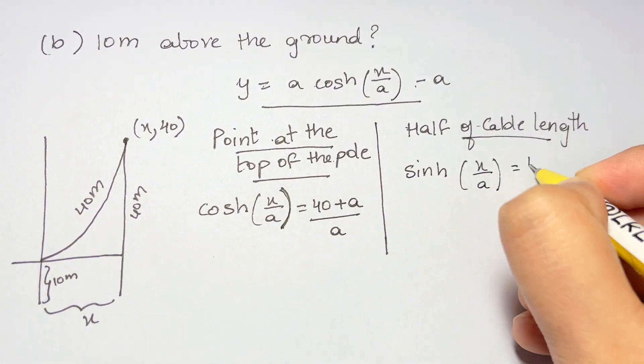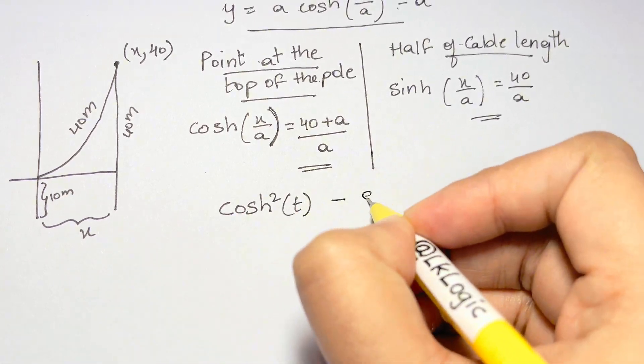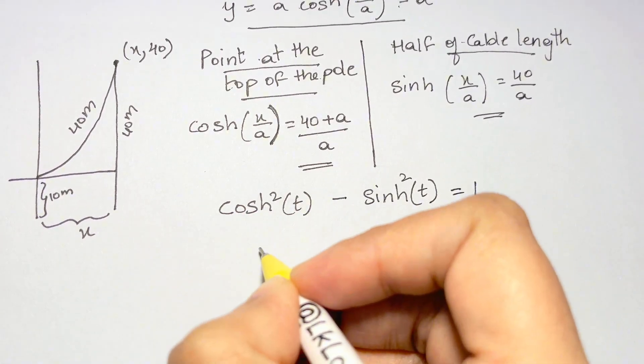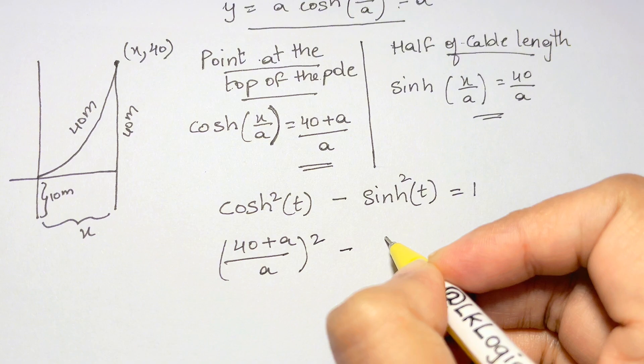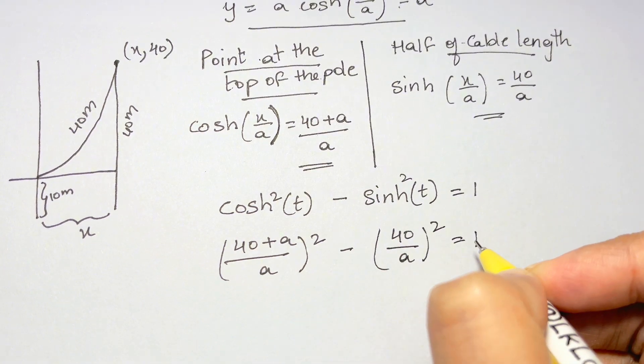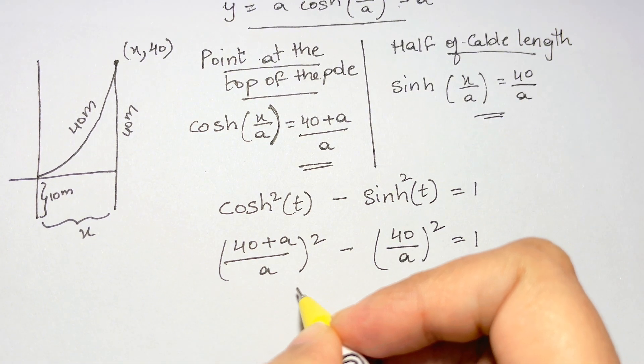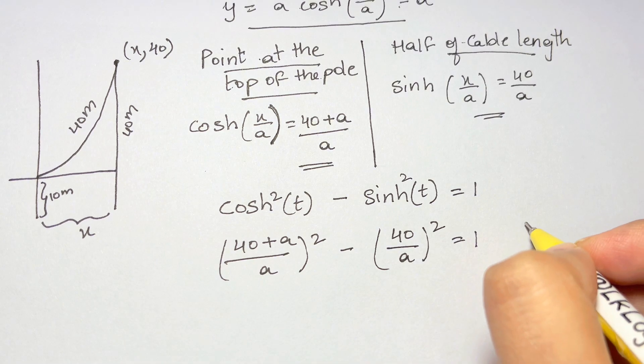Now when you substitute it into the hyperbolic identity you get the following equation, and if you try to solve it you run into a problem. This equation has no solution.